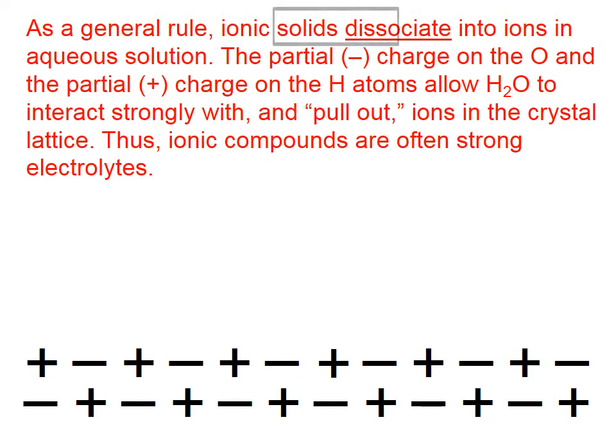As a general rule, ionic solids dissociate — that is, they split into ions in aqueous solution. The partial negative charge on the oxygen and the partial positive charge on the hydrogen atoms allow water to interact strongly with, and pull out, ions in the crystal lattice. Thus, ionic compounds are often, but not always, strong electrolytes. At the bottom of the page, we have a representation of an ionic substance.